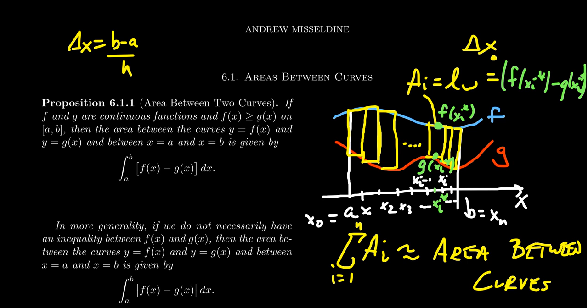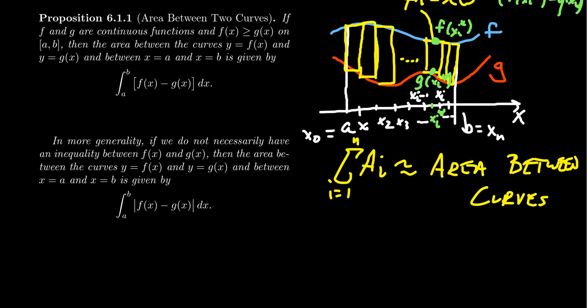We're going to take the top of the rectangle to be f of x_i star. So it's a representative of how high up f is. And on the bottom, we're going to take our representative to be g of x_i star. We're going to pick the same value. And so the length of the rectangle will then be the difference of these values. So we take f of x_i star minus g of x_i star, and you need to times that by delta x. That would give you the area of your rectangle.